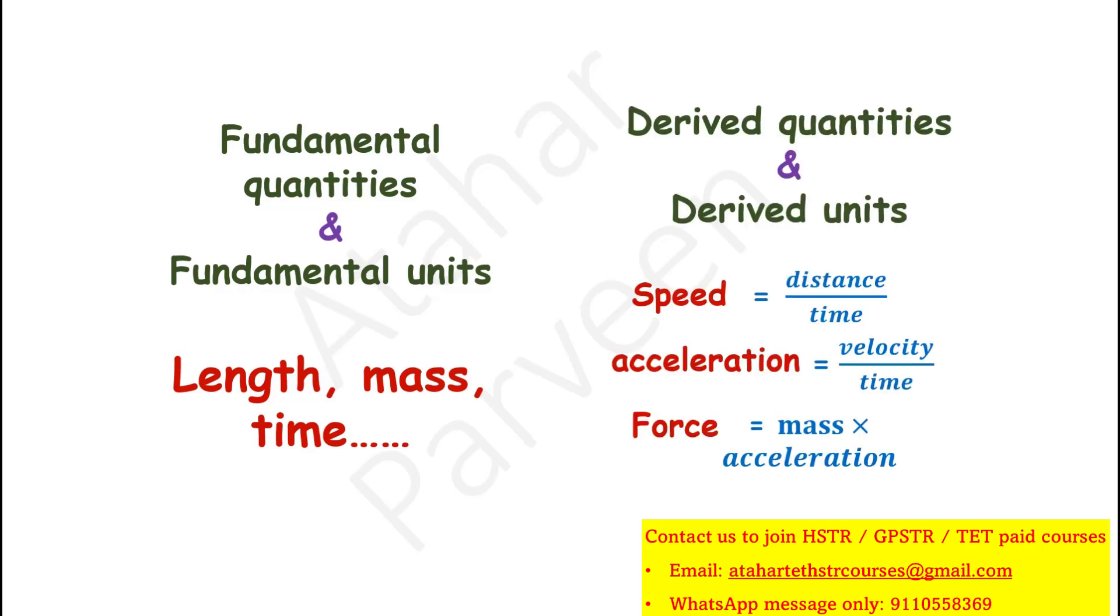And those quantities which can be expressed in terms of these fundamental quantities are known as derived quantities and their units are known as derived units. For example, speed, acceleration and force. Here, speed is equal to distance upon time, acceleration is the ratio of velocity and time and force is the product of mass and acceleration.